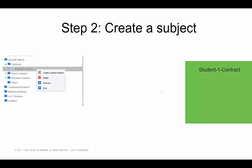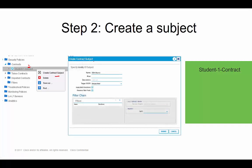That takes us to step two. I'm going to go under my actual contract, right-click it and say 'create contract subject,' which opens up a subject window where I simply name the subject. So visually: I created the contract, and within the contract I created the SSH subject. If I wanted to, I could click the plus sign to configure filters within the subject, but I'm going to separate that into the next step.